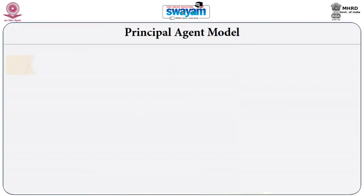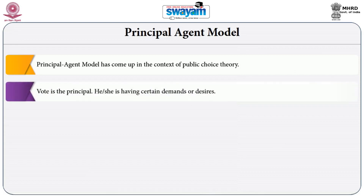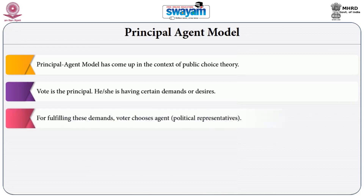The principal-agent model has come up in the context of the public choice approach. The principal-agent model means that the voter is the principal — the voter has certain demands and certain needs, but the voter does not have the time and specialized knowledge to fulfill all those desires and demands.